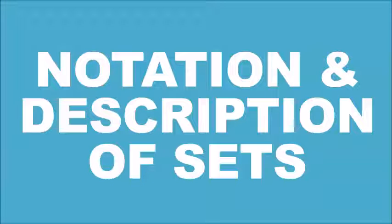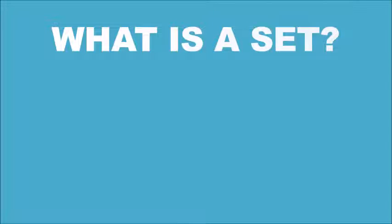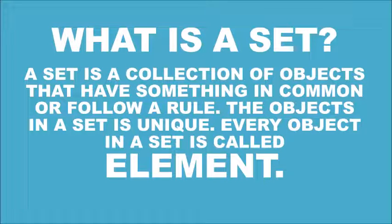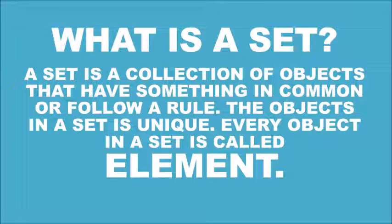Today, we're going to discuss the notation and description of sets. First of all, what is a set? A set is a collection of objects that have something in common or follow a rule. The objects in a set is unique. Every object in a set is called element.